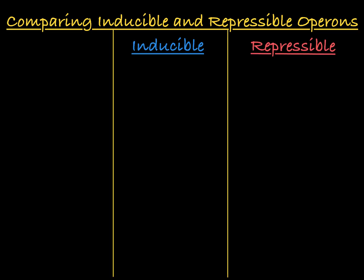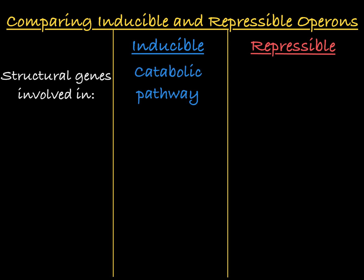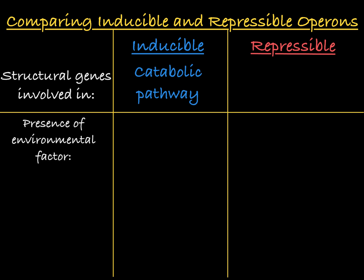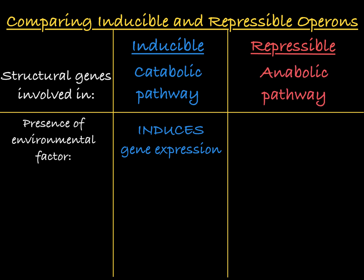Let's look at these two scenarios side by side. Inducible operons are usually involved in a catabolic pathway, a pathway that breaks down a factor when it's available in the environment. The operon's structural genes are not expressed unless that environmental factor is present — in this way, the presence of the environmental factor induces the activity of the operon. A repressible operon is usually involved in an anabolic pathway, one in which the cell is making something it needs. Its structural genes are expressed until that environmental factor is in abundance in the cell, at which point it represses the activity of the operon, limiting structural gene expression.